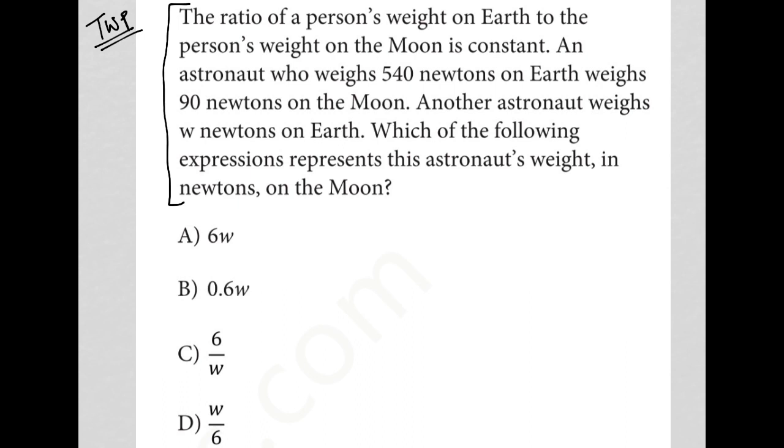So the first sentence in this question says the ratio of a person's weight on earth to the person's weight on the moon is constant. So I'm gonna just translate that to E over M equals K. Earth over moon equals K, which is my variable for constant.